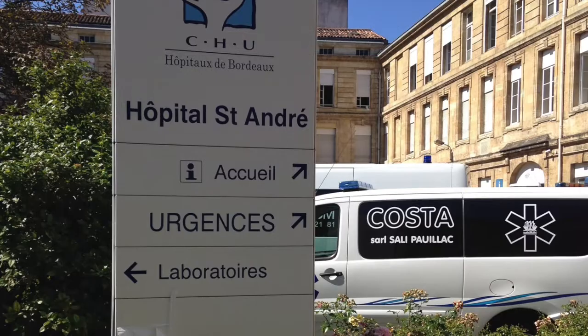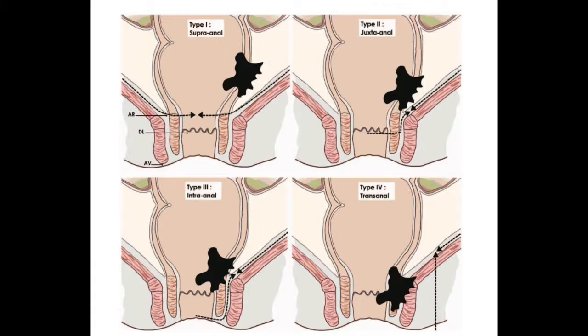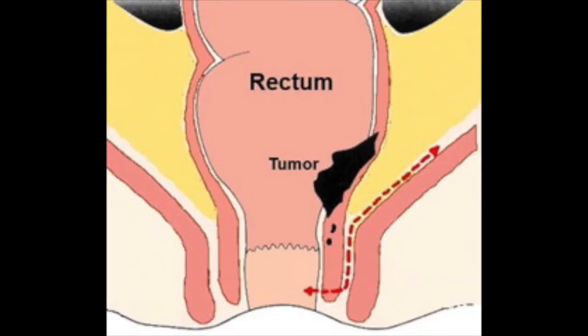He divided low rectal cancer into four types depending on the distance from the dentate line. This young lady has a type 2 anterior tumor, shown here on MRI to be two centimeters from the dentate line. The tumor was downstaged by long course chemoradiotherapy.